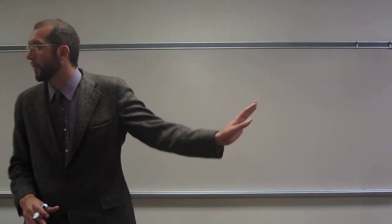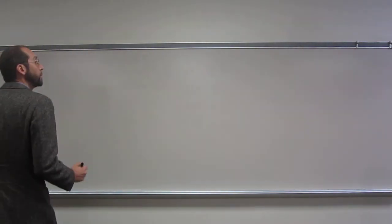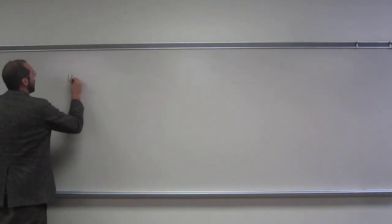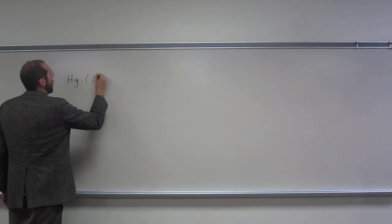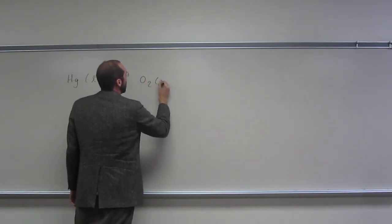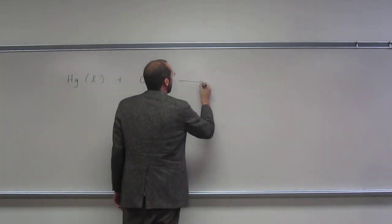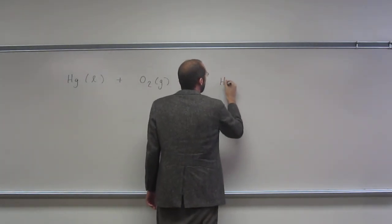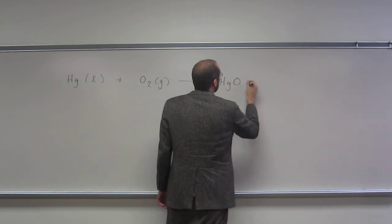I know you guys haven't balanced any reactions yet, so let me just write this reaction on the board. I have to remember what it is. So, mercury plus oxygen O2 goes to mercury 2 oxide.